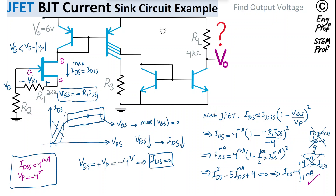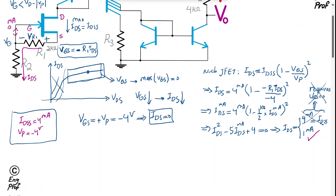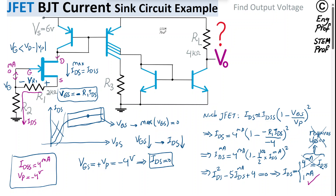We found IDS equals 1 milliamp. This current passes through R1 and R2 in series because there is no current that can flow out of the gate of the n-channel JFET — it has practically infinite input impedance. So 1 milliamp flows through the series combination of R1 and R2, which is also the same current going through the drain. This 1 milliamp is approximately the same current passing through the emitter of the first PNP transistor.